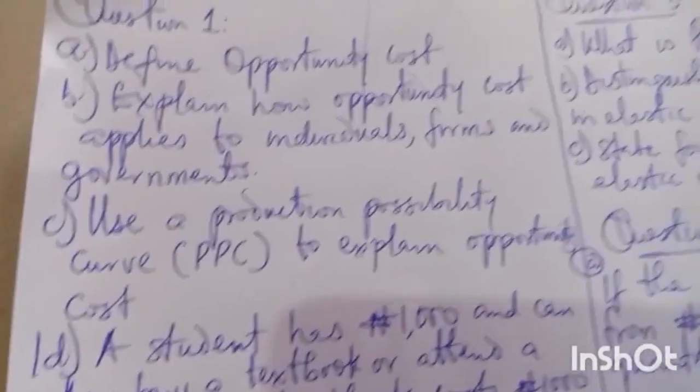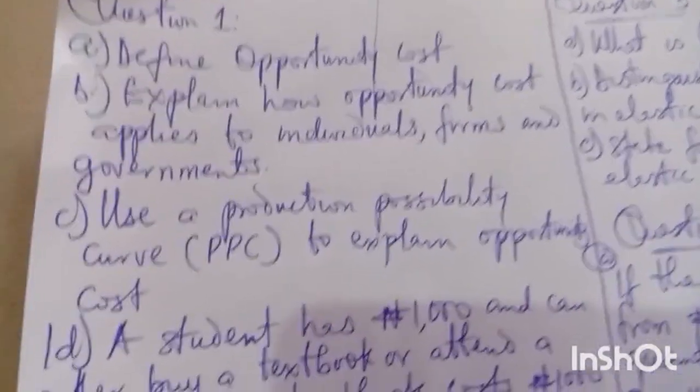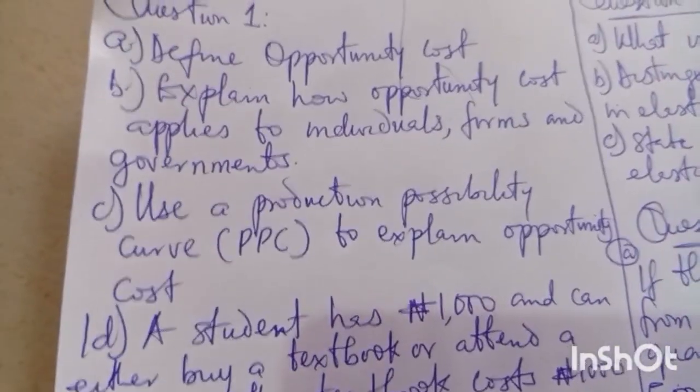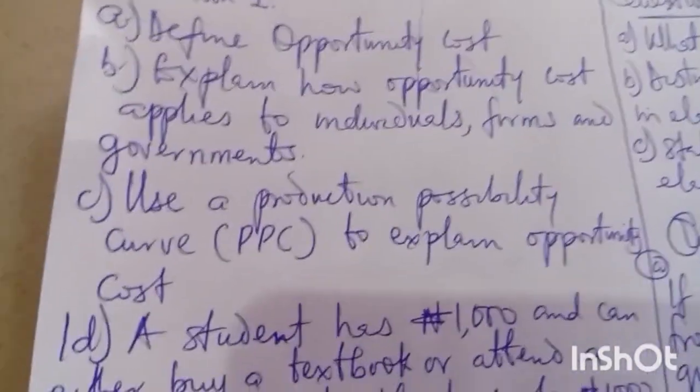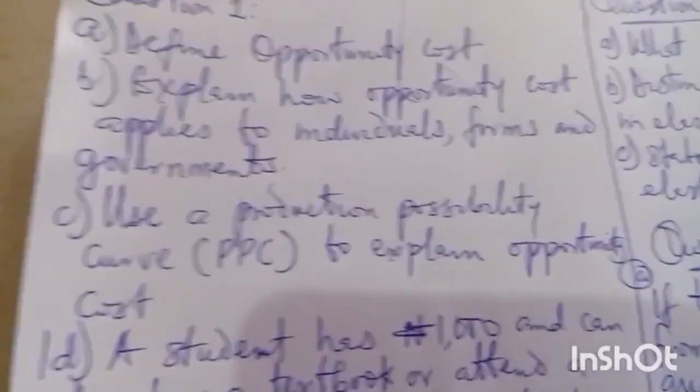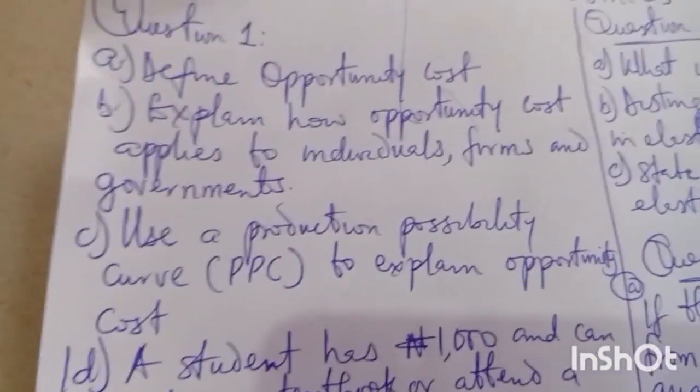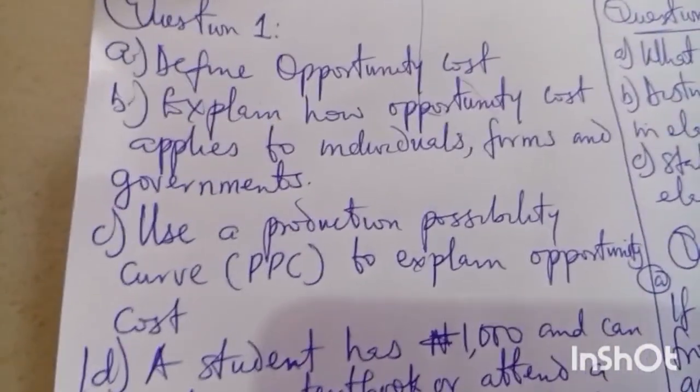Question one C says: use a Production Possibility Curve (PPC) to explain opportunity cost. For this one, there is a chart which you will see on the screen.